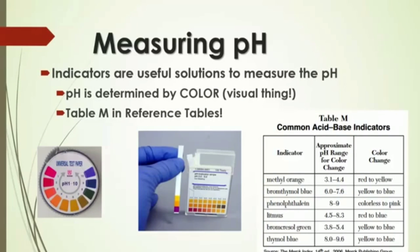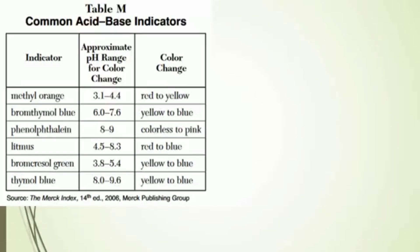When using pH indicators, we will use reference table M to determine the color the indicator will turn in various pHs. Acids have pHs between 0 and 7, and bases have pHs from 7 to 14. The only perfectly neutral pH is exactly 7. On reference table M we are given the pH range where the indicator is changing colors. For methyl orange, the range is 3.2 to 4.4. The indicator is not very useful when it is changing colors, but it is very useful at pHs before and after the range.